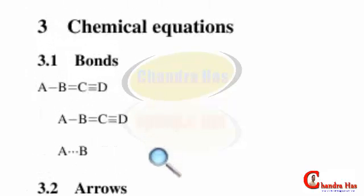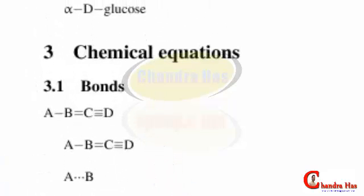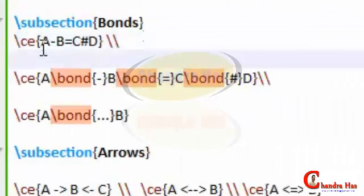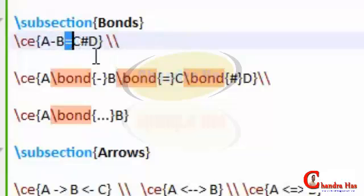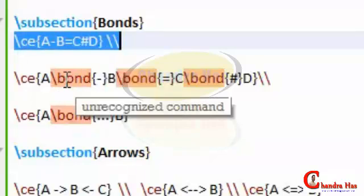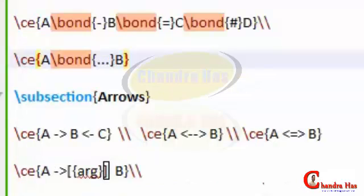Now we will discuss chemical equations — specifically bond types. There are three basic types: single bond, double bond, and triple bond. Just write \ce{A-B} with a dash for a single bond, an equal sign for a double bond, and a hash symbol for a triple bond. If those don't work, use the \bond command with \bond{-}, \bond{=}, \bond{#}. For dot bonds, use \bond{.} inside curly brackets.